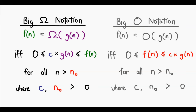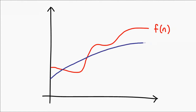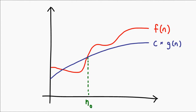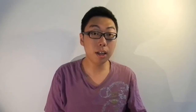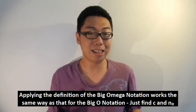Instead of having C·G(N) serve as an upper bound to F(N), C·G(N) is going to serve as the lower bound. That is why the definition states that C·G(N) must be greater than zero and F(N) must be greater than C·G(N). You can imagine the graph to be almost exactly the same as what we've seen last time, except now the line for C·G(N) is below that of F(N). The technique to use Big Omega by definition is basically the same as that of Big O notation.